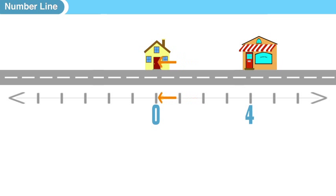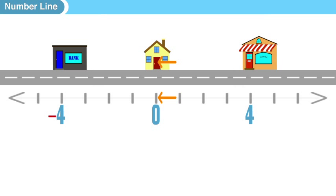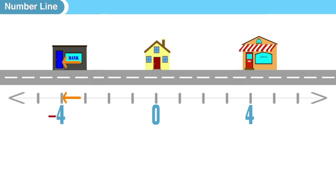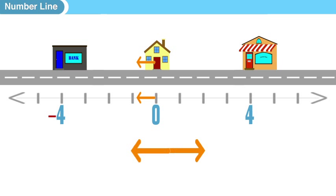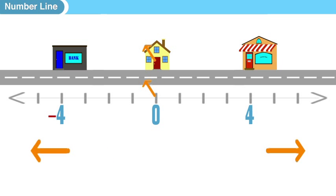Now you want to go to the bank, and it's four miles to the west. So we're going to send you in the negative direction — the opposite direction — to the bank. The sign on the four is negative, and all that means is that there was a change in direction. That's why the number line is useful: it shows us quantities in opposite directions.